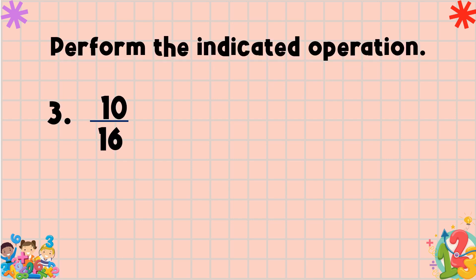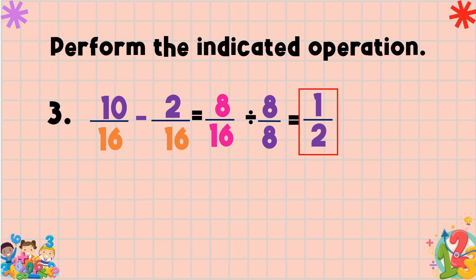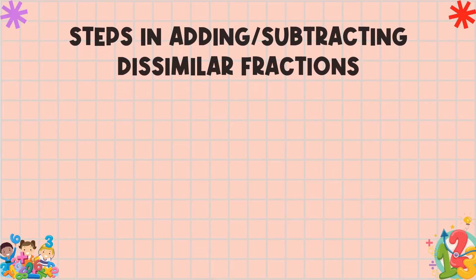Next example: ten over sixteen minus two over sixteen. The denominators are the same, so we subtract the numerators — ten minus two is equal to eight. Copy the common denominator, which is sixteen. Our answer is eight over sixteen. Eight and sixteen are both divisible by eight, so eight divided by eight is one and sixteen divided by eight is two. Therefore the final answer is one half.